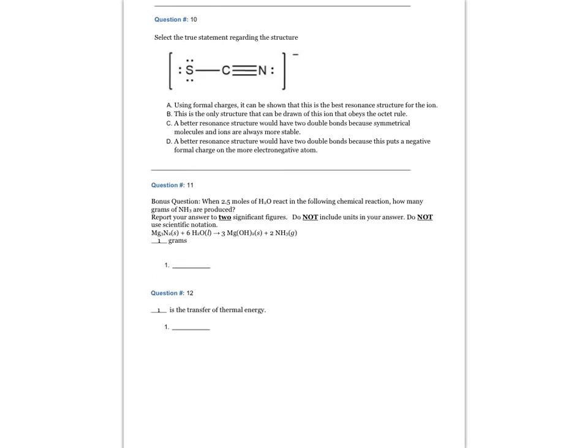Question number 10: Select the true statement regarding the structure. The answer is D, a better resonance structure would have two double bonds because that puts a negative formal charge on the more electronegative atom.